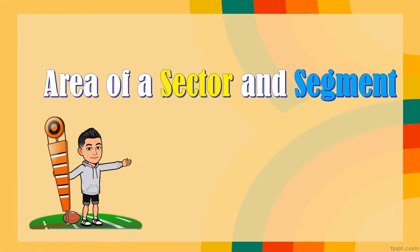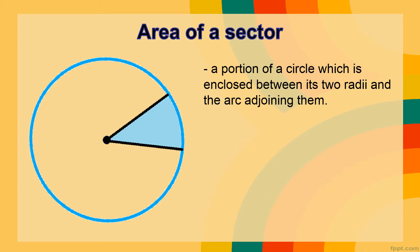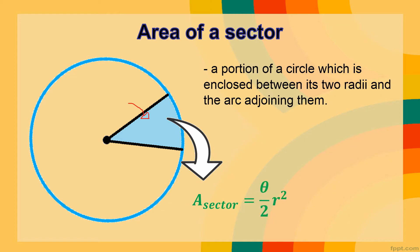The area of a sector and segment of a circle. First, let us deal with determining the area of a sector of a circle. The area of a sector is a portion of a circle enclosed between its two radii and the arc adjoining them — just like a pizza slice. To find the area, we use the formula: Area of sector = θ/2 × r², where θ is the radian measure of the angle and r is the radius. Since angles are often given in degrees, we convert using θ = (degrees/180) × π.